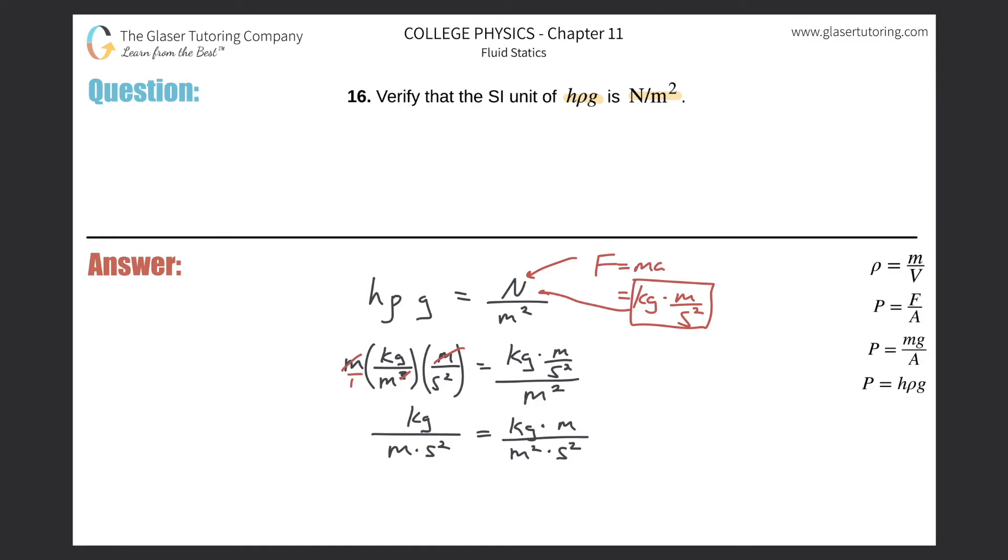And now what I can do is cancel this meter with one of those meters at the bottom. And lo and behold, what am I left with on the right-hand side? I'm left with kilogram per meter times second squared. Oh, would you look at that? Surprise, surprise, they are identical.